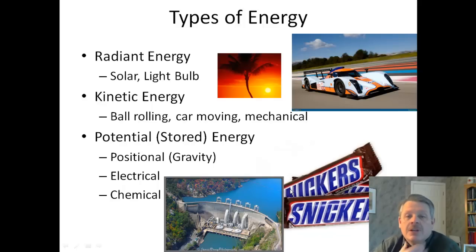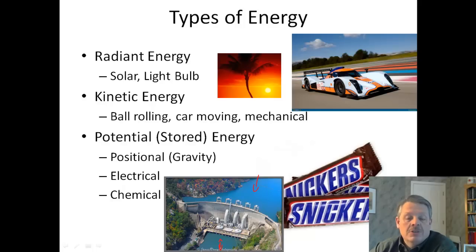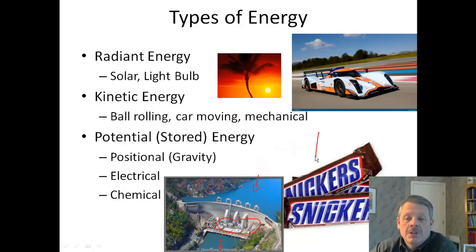We have many different types of energy. We have radiant energy, like from the sun. We have kinetic energy, like a car moving. We have potential stored energy — for example, at Smith Mountain Lake, we have a big dam, and the water that's 200 feet higher than the water coming out the bottom has a lot of potential or stored energy because it can do work as it comes in and turns the turbines. We have electrical energy, which is stored energy. But we also have chemical energy — for example, the chemical energy stored in a Snickers bar.